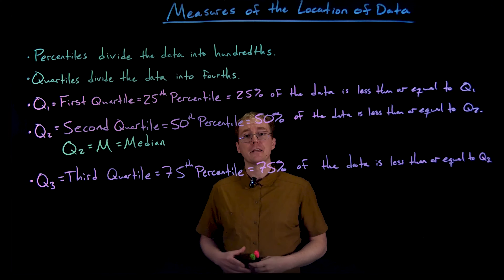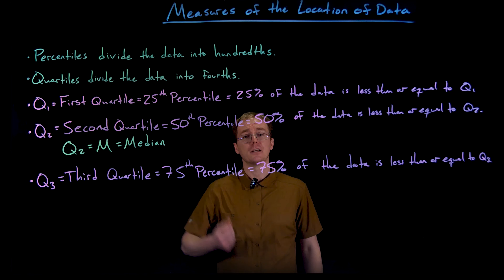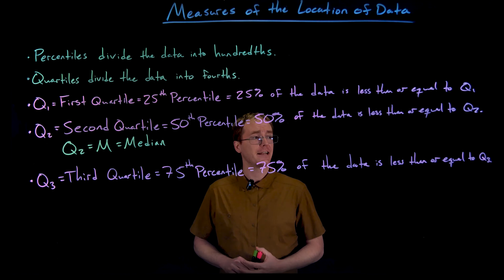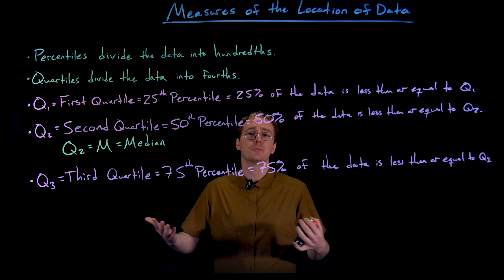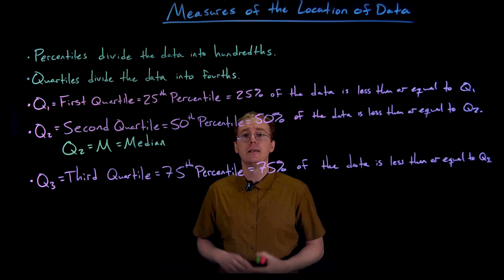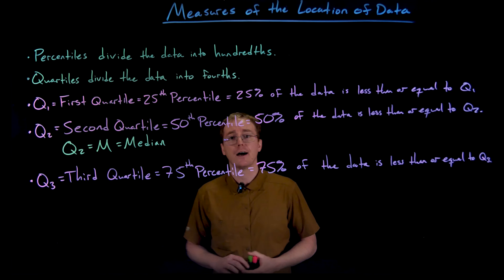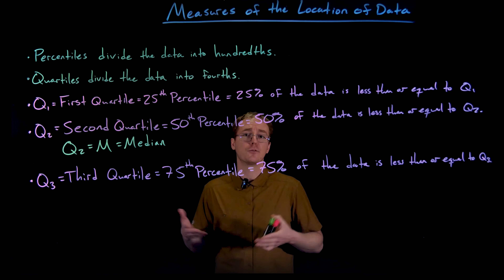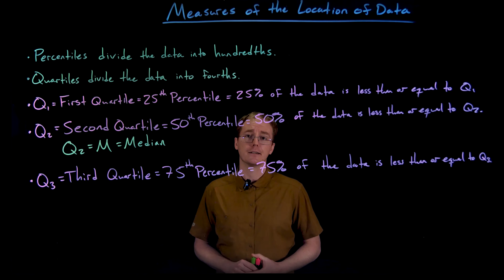While we could define a fourth quartile — the fourth quartile would be like the 100th percentile, meaning 100% of the data is less than or equal to it — that's really just the maximum data value in our data set. Similarly, we could define a zero quartile where 0% of the data is below Q0, but that's just the minimum value in our data set.